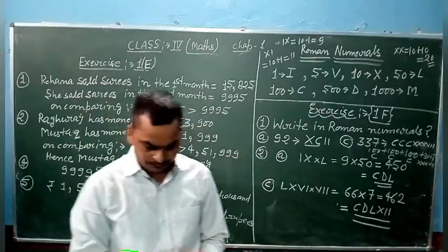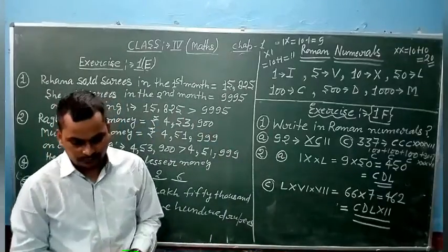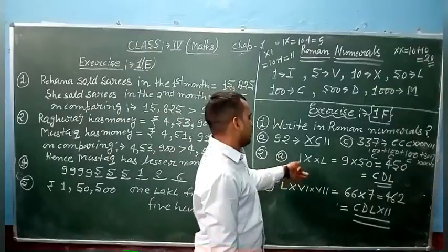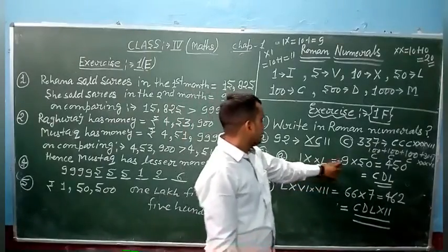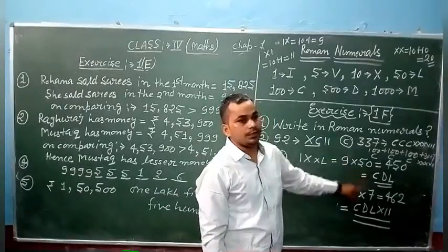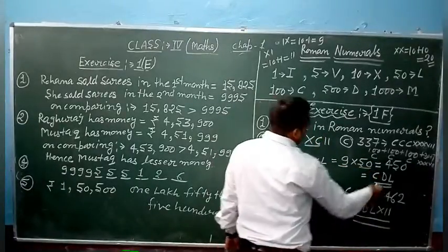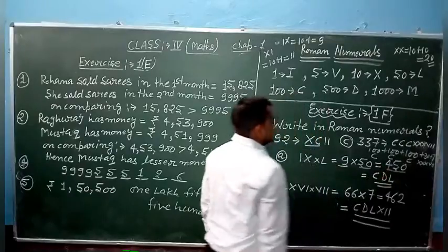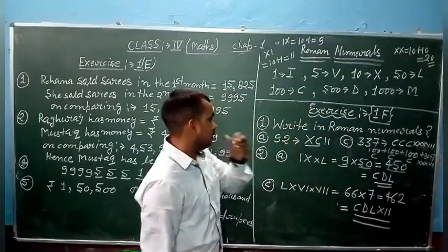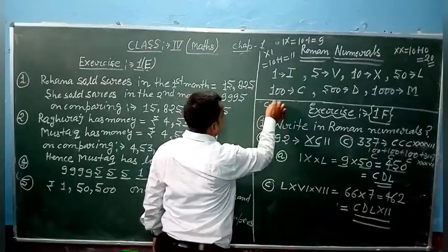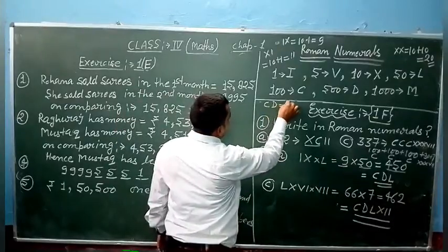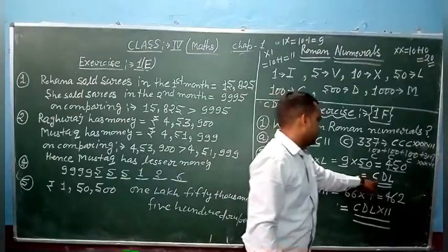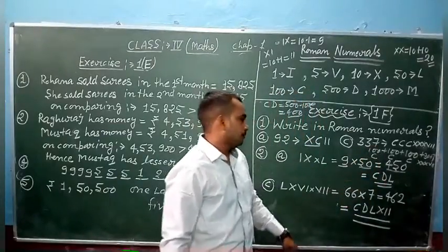Next, exercise number 2. Write each factor in the Hindu-Arabic numeral system, find the product, and write it back in Roman numerals. So here, IX into L. IX is 9 and L is 50. So 9 into 50 equals 450. And when we write it in Roman numerals, we call it CD. Then CD equals 400, D equals 500.